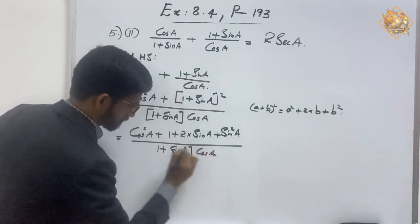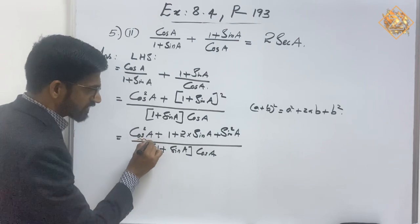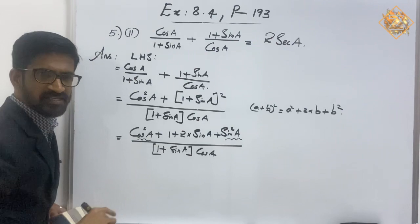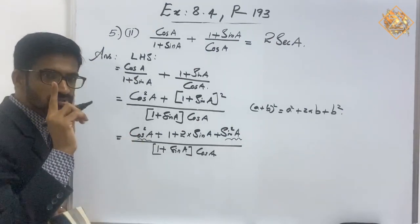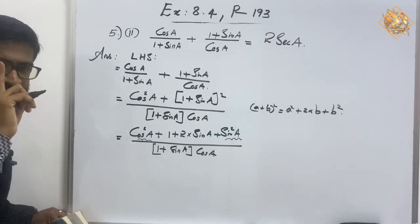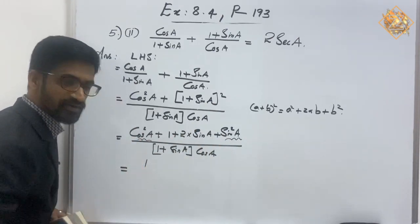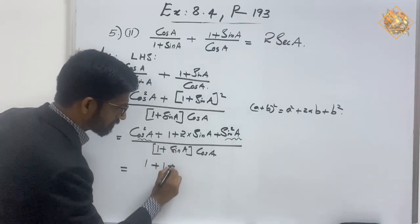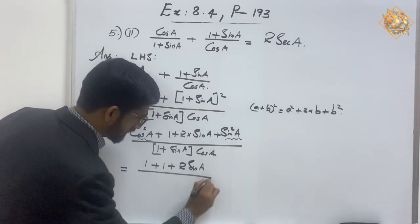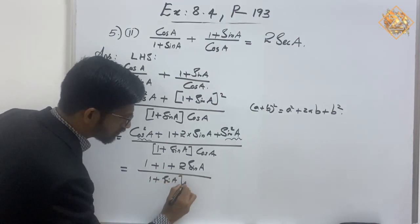Now we have cos²(a) and sin²(a) together. Recall the identity: cos²(a) + sin²(a) = 1. So we substitute cos²(a) + sin²(a) = 1. The expression becomes 1 + 1 + 2sin(a), over (1 + sin(a)) × cos(a).